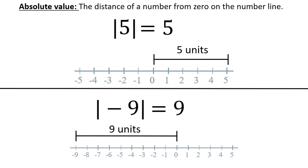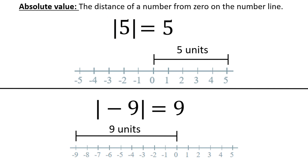Many people think of the absolute value function as the function that makes numbers positive. If the inside is already positive, it stays positive, as was the case with the absolute value of 5. If the inside is negative, the absolute value makes the value positive, as was the case with the absolute value of negative 9.